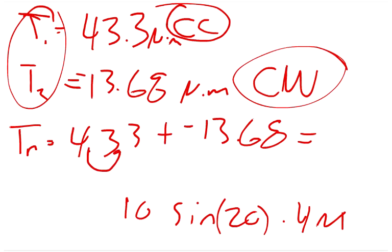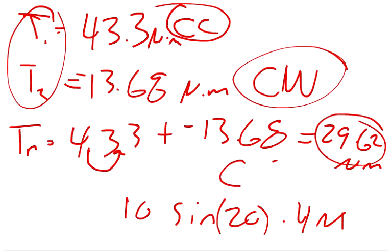and so actually this decimal goes right here by the way. So 43.3 minus 13.68 equals 29.62 newton meters, and that's going to be traveling in the, so it's a positive number, it's going to be traveling in the counter clockwise direction. The counter clockwise.